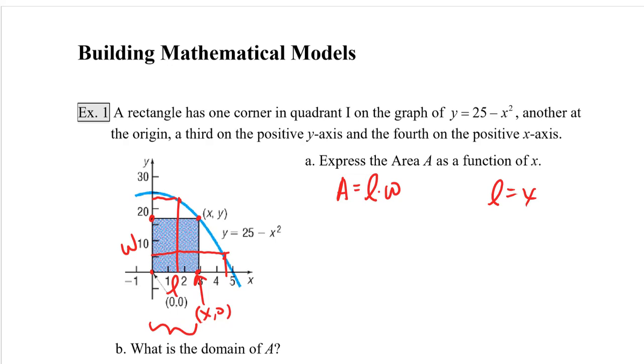Now we can use the same idea here. And we can recognize that the width is equal to y units. Now keep in mind that as we're sliding along this graph, y is going to change because y is a function of x. So I know that y is equal to 25 minus x squared. So I'm going to say that w, which is equal to y, is equal to 25 minus x squared. So if I put it all together, now I've got the area as a function of x, and that's going to be x times (25 minus x squared).